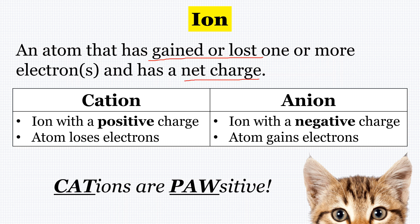There are two types of ions. We have a cation, which has a positive charge, and we have an anion, which has a negative charge.